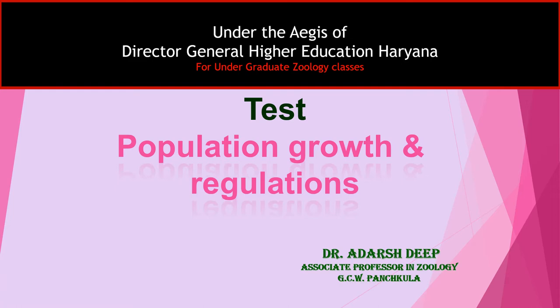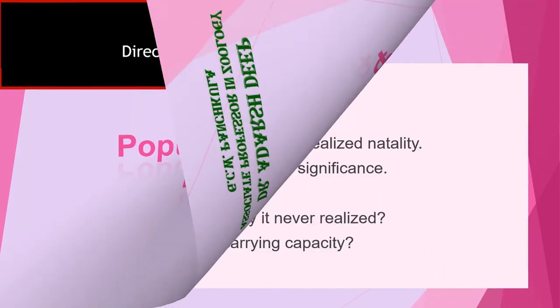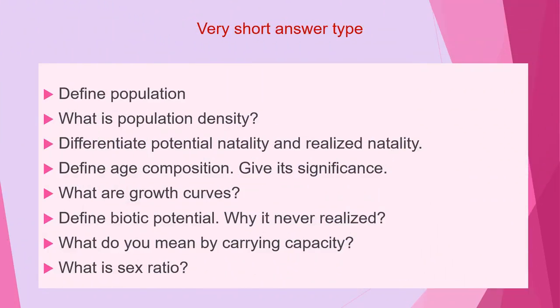The first category of questions are very short answer type questions, which will cover the first compulsory question of your paper, and you have to answer these questions in two to three lines.